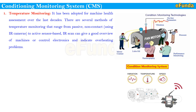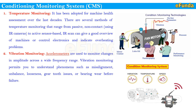Second is vibration monitoring — a very old and most commonly used method for assessment of machine condition. It helps detect failures and understand their root causes. Mainly accelerometers are used to monitor changes in amplitude across a wide range of frequencies. Vibration monitoring permits you to understand phenomena such as misalignment, unbalance, looseness, gear tooth issues, or bearing wear before failure.